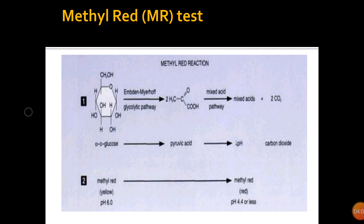The mixed acid pathway gives four molecules of acidic products, mainly lactic acid and acetic acid, one molecule of neutral fermentation product ethanol, one molecule of carbon dioxide, and one molecule of hydrogen per molecule of glucose fermented. These large amounts of acid result in a significant decrease in pH of the medium below 4.4, which is visualized using a pH indicator. The methyl red reaction shows glucose being fermented to produce mixed acids with carbon dioxide as a by-product.